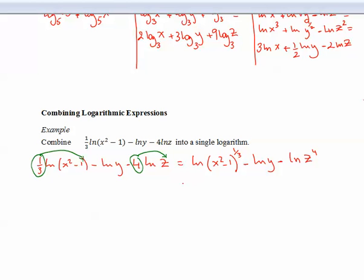Now, I'm going to use the second law, because I have this subtraction here. It tells me that it's ln of x squared minus one to one third divided by—so y with the negative becomes the denominator, times z to the fourth. And this is the same as the cube root of x squared minus one all over y times z to the fourth.